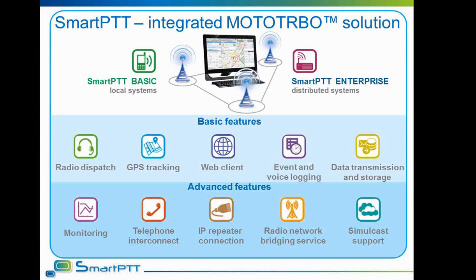Dispatcher software gives the opportunity to control and monitor the flow of data and voice in a radio network, request location of subscribers, and monitor the state of repeaters. SmartPTT connects to MotoTURBO networks directly via IP, including Capacity Plus and Link Capacity Plus over the Network Application Interface for both voice and data transmission. Capacity Plus networks can also be monitored via IP connection without NAI, but in that case control stations are needed to send data and make calls.